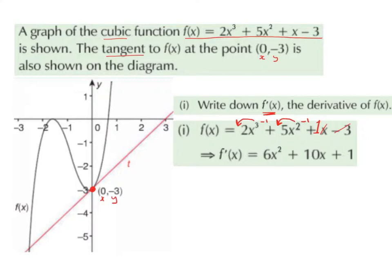So what we have to do is bring down the power in front and reduce the power by 1. These are the steps involved in differentiation. So we bring down the 3 in front of the 2. 2 multiplied by 3 gives us 6, and 3 take away 1 gives us 2. We repeat this step with the next term. We bring down the power in front, and we reduce the power by 1.